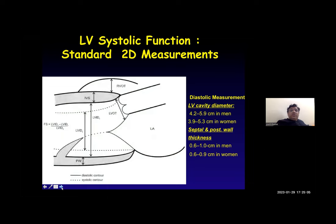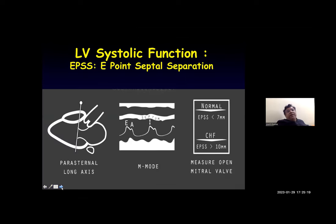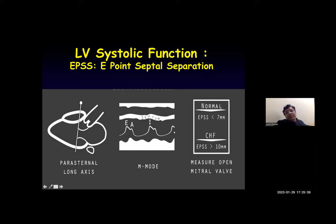Standard two-dimensional measurements of the left ventricular cavity, septal wall, and posterior wall thickness are used for LV systolic function assessment. Normal measurements are referenced. E-point septal separation (EPSS) is measured in M-mode in the parasternal long axis view using the two leaflets. An EPSS of less than 7 mm is normal; greater than 10 mm is suggestive of failure. It must be measured when the mitral valve is open.